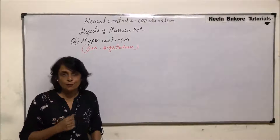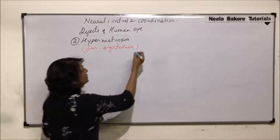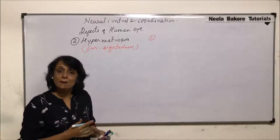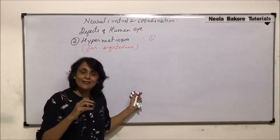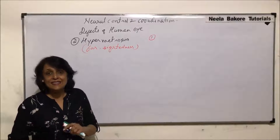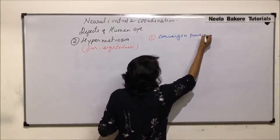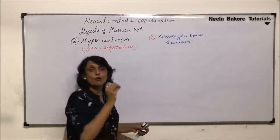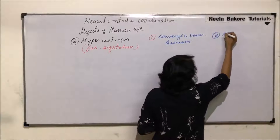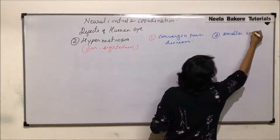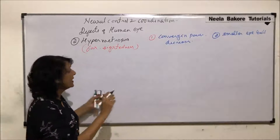The person can see distant objects and so we call them far-sighted, but closer objects are blurred. There are two reasons for this defect, exactly opposite of what happens in myopia. First reason: the lens of our eye, which is a converging lens, its power decreases — so the converging power decreases, and it is not able to focus rays on the retina. The second reason is a smaller eyeball. In both cases the image is formed behind the retina.